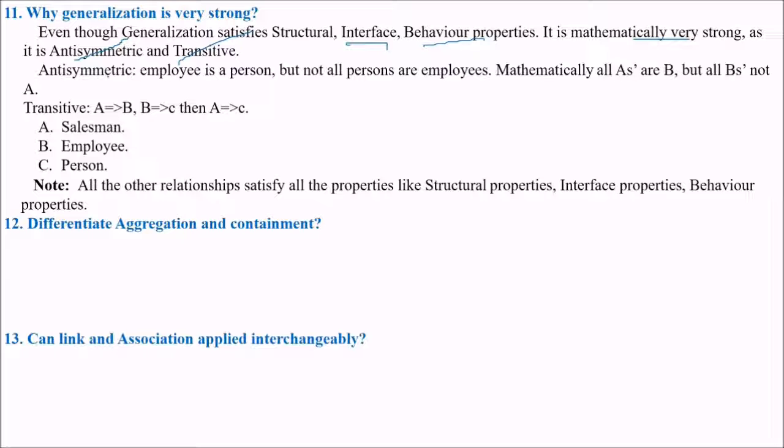Anti-symmetric means if employee is a person, but not all persons are employed. Mathematically, all A's are B but all B's are not A. What about transitive? If A is implying B, B is implying C, A is implying C. That is it is anti-symmetric also and transitive also. Like salesman, employee and person. All the other relationships satisfy all the properties like structural properties, interface properties, behavioral properties.